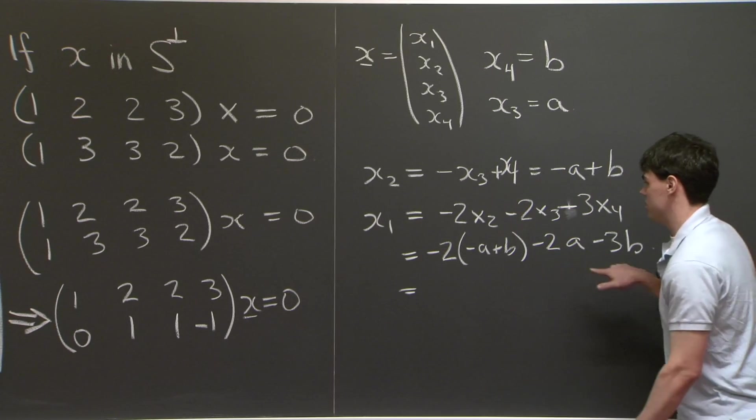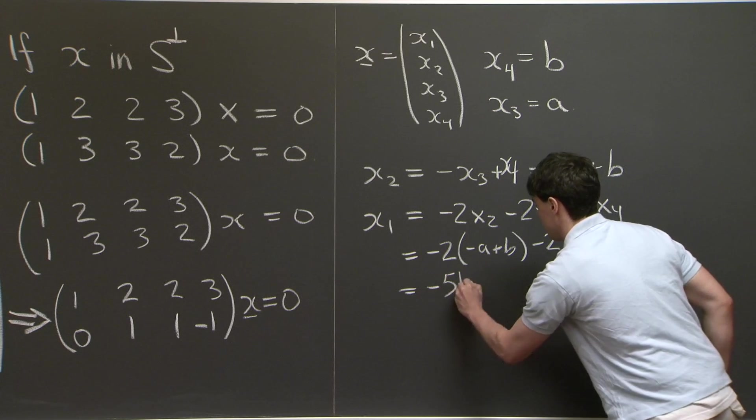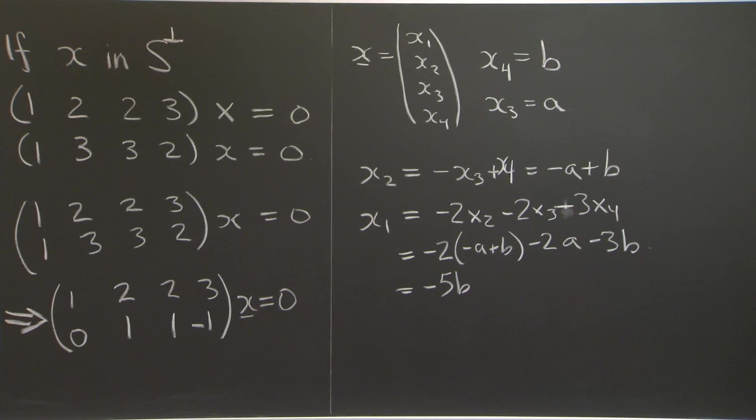And then the top equation says that x1 is equal to -2x2 - 2x3 + 3x4. And if I substitute in, x2 is -a + b, x3 is a, and x4 is b. So, when the dust settles, the a's cancel, and I'm left with -5b.